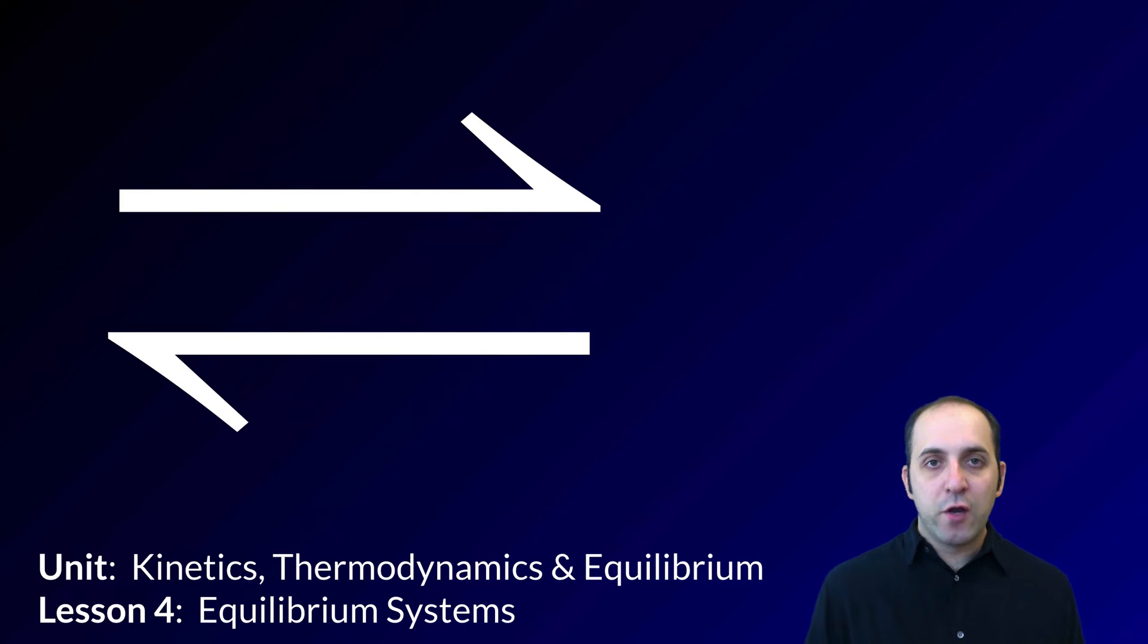Hi and welcome to lesson four here in our unit on kinetics, thermodynamics and equilibrium. We're actually going to move to equilibrium right now, so here you see the double arrow. That double arrow is going to be really important in chemistry. Anytime you see that, that means we're talking about a situation that exists at equilibrium.